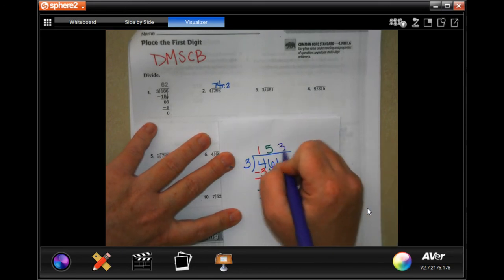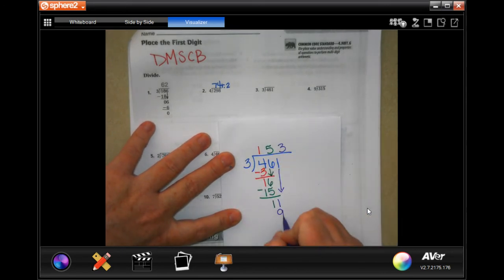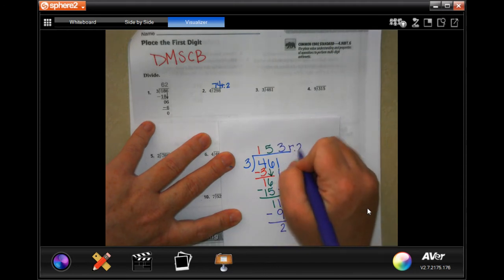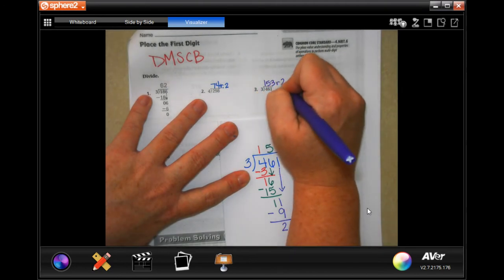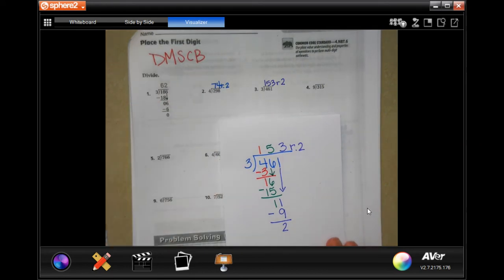3 will go into 11, 3 times. 3 times 3 is 9. Subtract, get 2. Remainder 2. 153 remainder 2. Write down your work, guys. It's important.